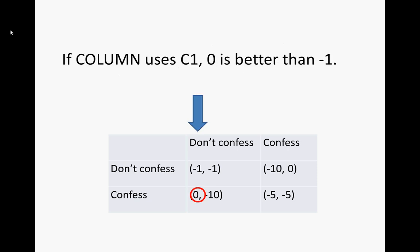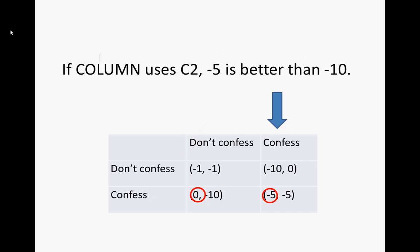If Column uses Column 2, Row's payoffs would be either negative 10 or negative 5. The bigger one, negative 5, is his best response.